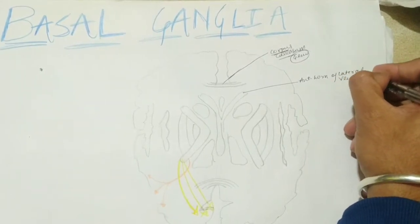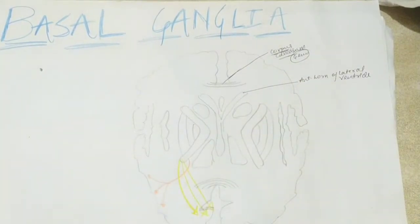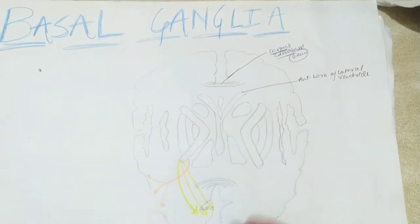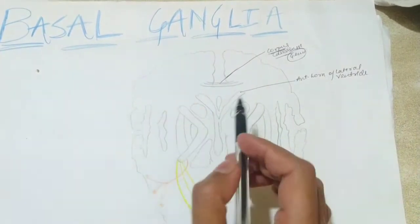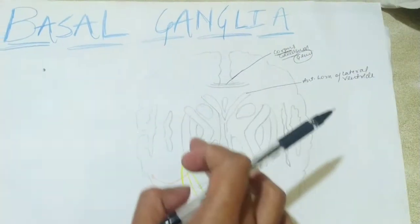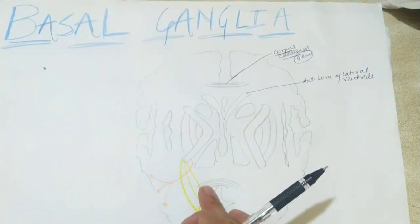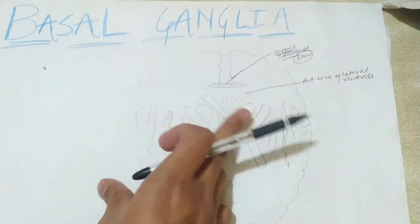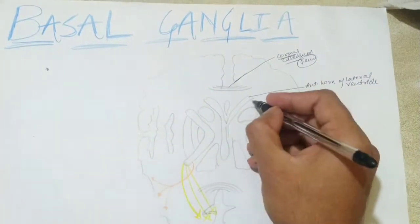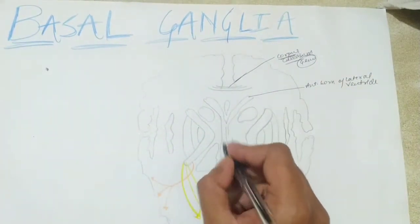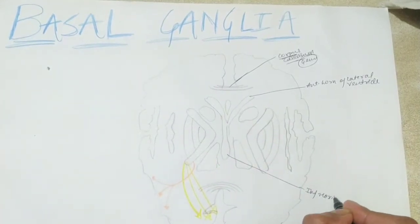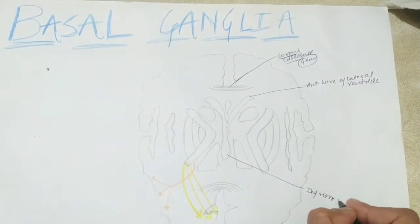CSF circulation is done by the lateral ventricles — these are the first and second ventricles — and this lateral ventricle is connected with our fourth ventricle through our cerebral aqueduct below. The lateral ventricle takes a curve and connects through your foramen of Monro with the third ventricle of our cerebrum. This is your lateral ventricle anterior horn, and this horn is actually your inferior horn of your lateral ventricle.